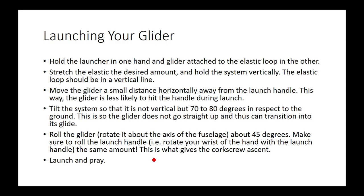When you launch your glider, here's a step-by-step guide from Scioli.org — I did not write this. You want to hold the launcher in one hand and attach the glider to the elastic loop in the other. Usually you want a nose piece with the string looping around it, then the elastic loops around the pole. Stretch the elastic to however long you want — usually everyone just stretches it fully for consistency. The loop should be in a vertical line.